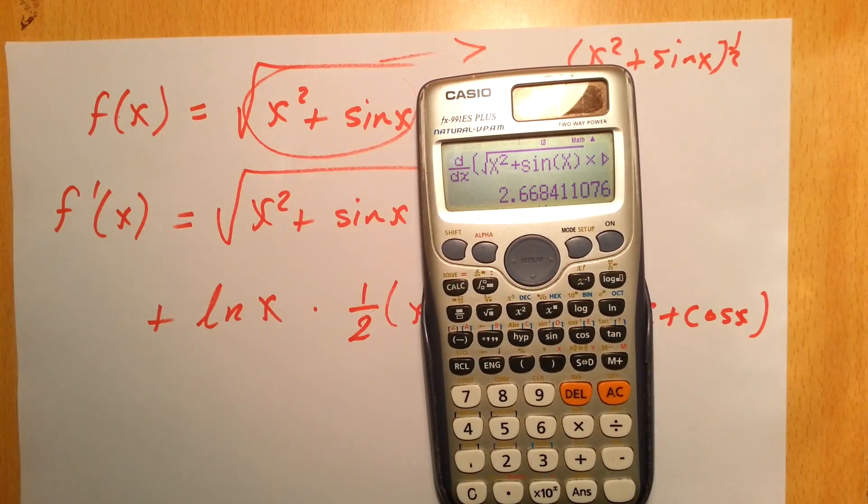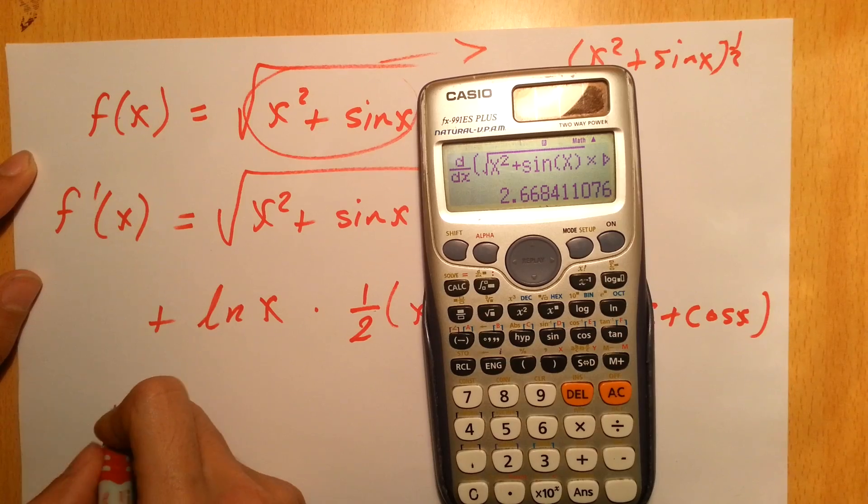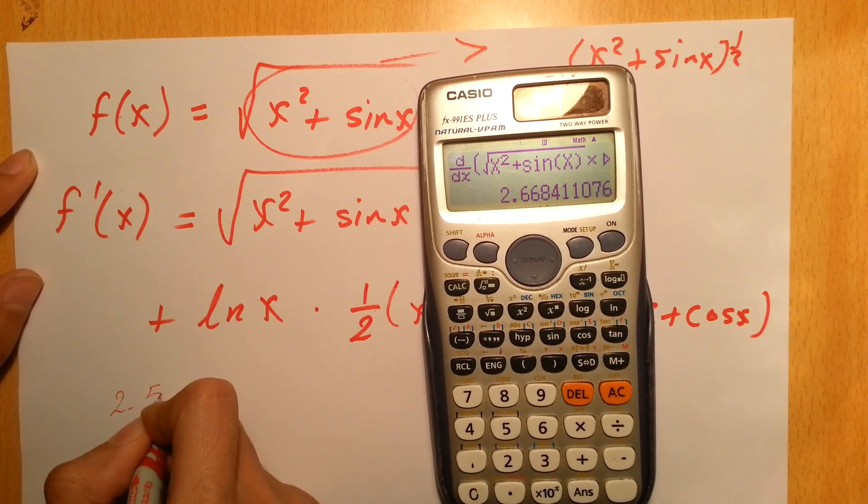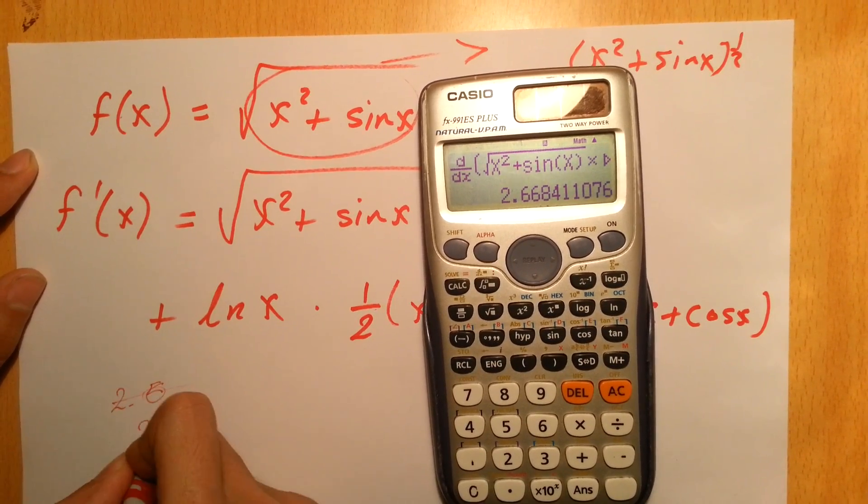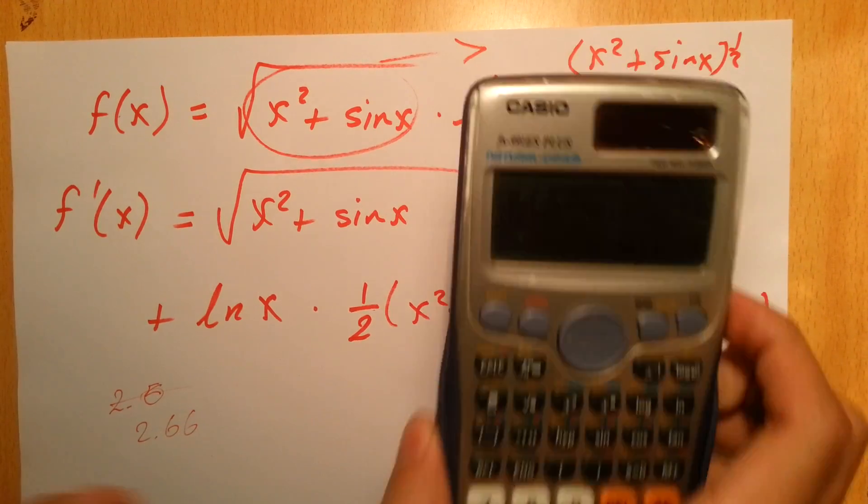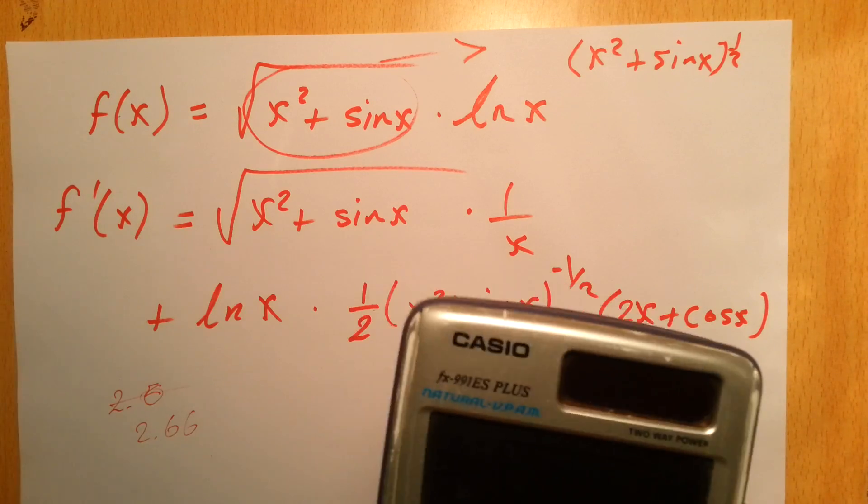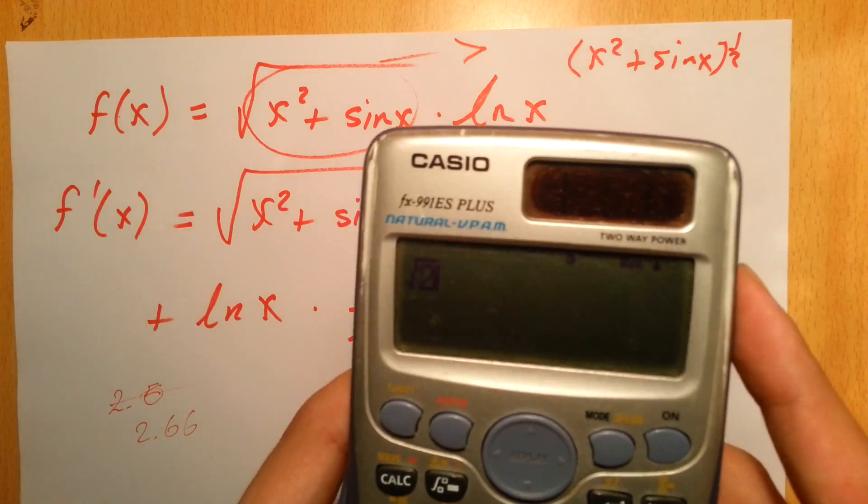It sometimes takes a while because, you know, these calculators have speed limits. It's 2.6684 something. So we check our function, and instead of x we plug 5: square root of 25, which is 5 squared, plus sine of 5.